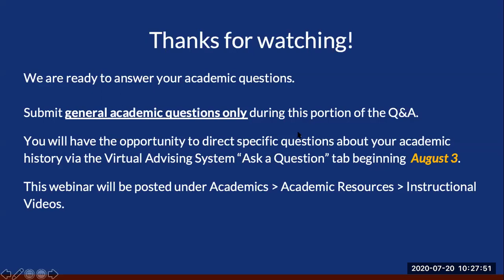If you're in a department with a capped major and want to switch to another capped major within the same department, that would be up to the department. You would contact the department and ask how you switch into another major. A lot of them, especially in engineering, will make you apply to the other major within the department. Some other departments will allow you to switch within the department, so it really just depends which capped major you're in.